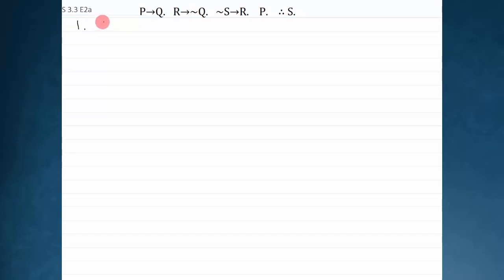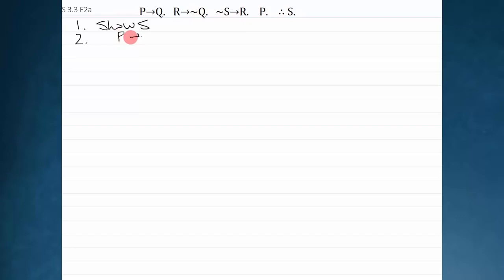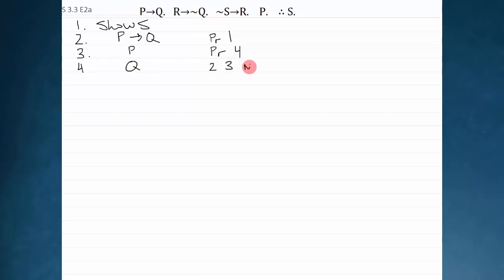A derivation always starts with a show line. I'm going to state my desired goal: I want to show S. Now I look around and try to see how I can combine my premises. I notice that premise one is a conditional P arrow Q and premise four is P — the antecedent of this conditional. So I state P arrow Q as premise one and P as premise four, and now I can do a modus ponens to infer Q. That's lines two and three combined with modus ponens.